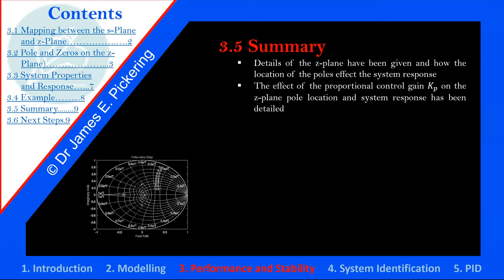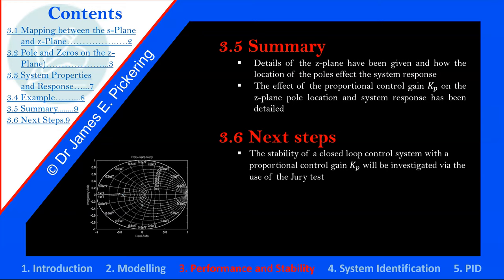In summary, the details of the Z-plane have been given: lines of natural frequency, lines of damping, radius of 1, and poles needing to be within the unit circle for stability. Outside the unit circle gives an unstable system. The effect of proportional control gain on pole location and system response has been shown. Next, we'll look at the stability of the closed loop system using the Jury test to determine the range of Kp that gives a stable system.